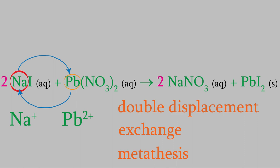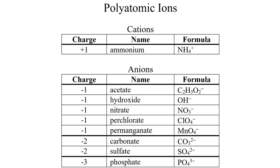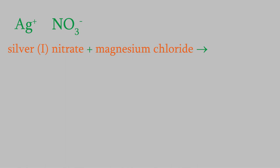Let's try another example. Suppose we start with silver-1-nitrate and magnesium chloride — what will we get as our products? We start by writing the formulas for the two reactants. Silver-1-nitrate: silver has a charge of plus one, and nitrate has the formula NO3 with a charge of minus one. Since the charges are plus one and minus one, we only need one of each to make the charges cancel.